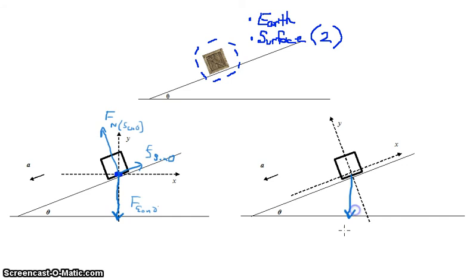So we have the force of the Earth pulling straight down. We then have the normal force exerted perpendicular to the surface—it's the surface on the object.